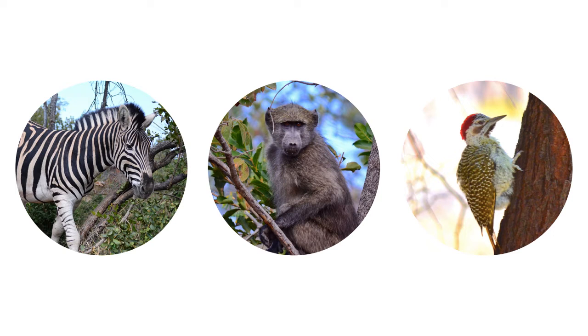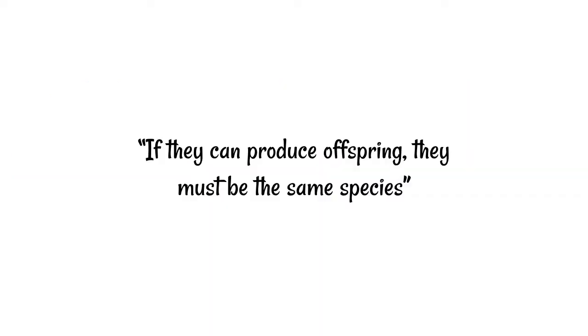One way of thinking is that if they can produce offspring, they must be the same species. A zebra and a monkey, for example, could not produce offspring. But this definition doesn't really always hold true.